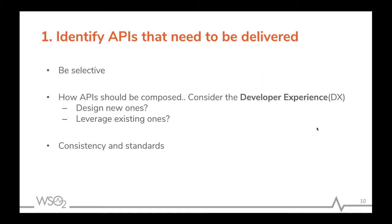When it comes to how an API should be composed, the API product manager needs to decide if a new API needs to be designed, or if there are existing APIs that can be leveraged in order to provide the functionality or requirement needed. To understand this, we're going to look at an example through the WSO2 API Manager.